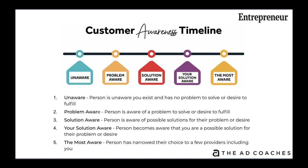One issue advertisers have — if they've done Google advertising — is that they're trying to take the principles that work in Google and apply them to Facebook. Google advertisers really live in the 'problem aware' area: a person is aware of a problem they need to solve or a desire they want to fulfill. They go to Google, type in a keyword, and begin their search. That's how you target people based on problems they have.